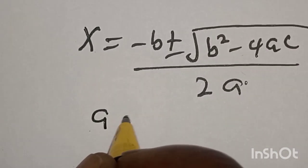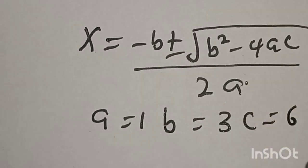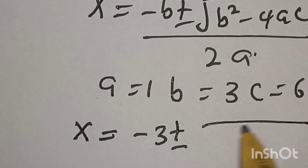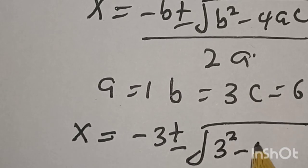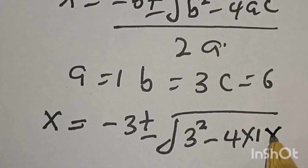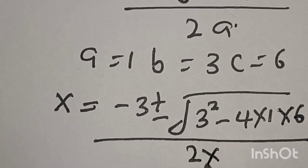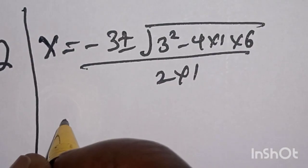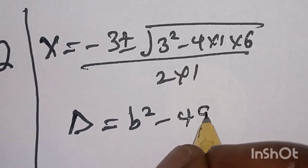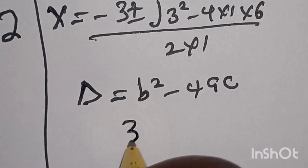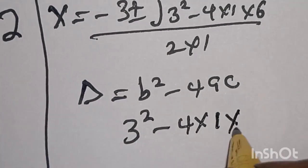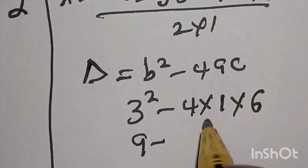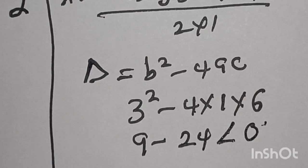Here, a = 1, b = 3, c = 6. Substituting: s = (-3 ± √(3² - 4·1·6)) / (2·1). The discriminant is 3² - 4·1·6 = 9 - 24 = -15, which is less than 0. Since the discriminant is negative, this case is rejected and gives no real solutions.